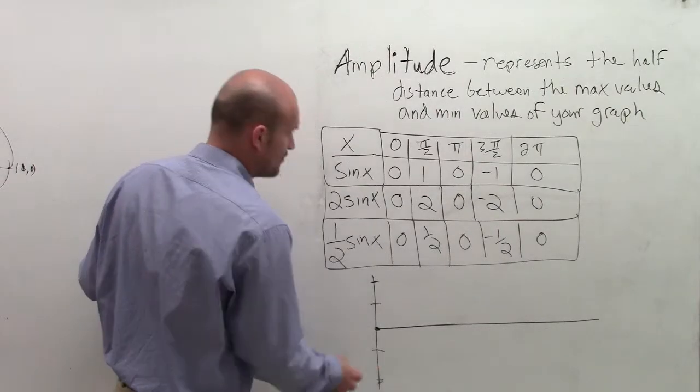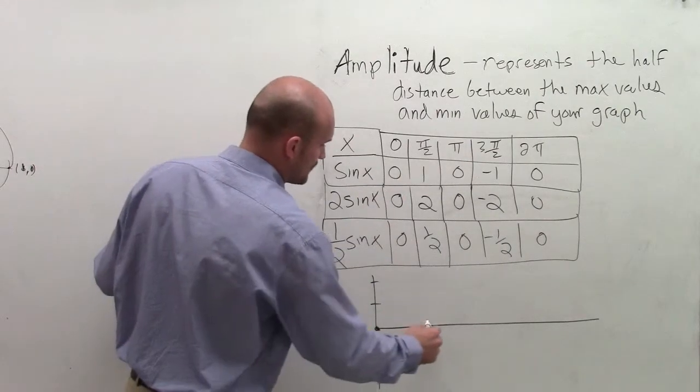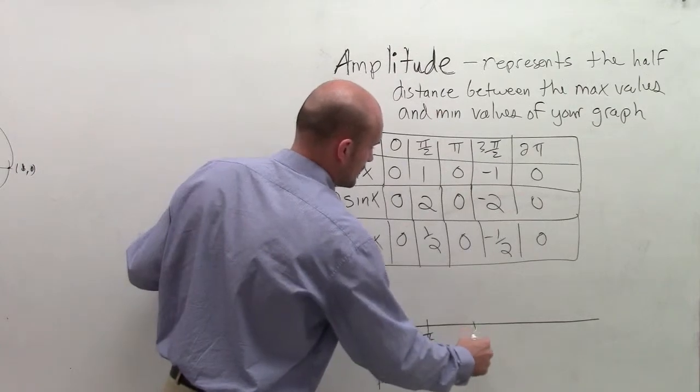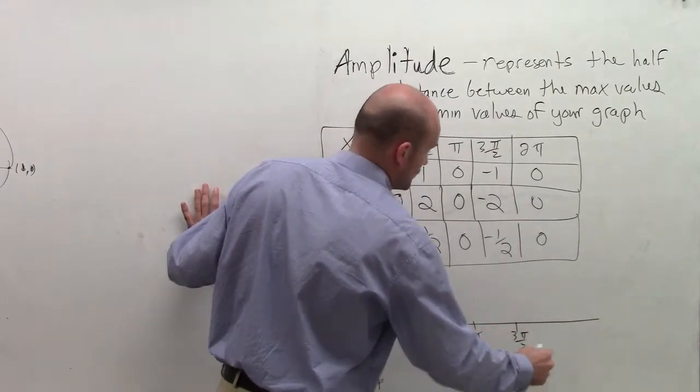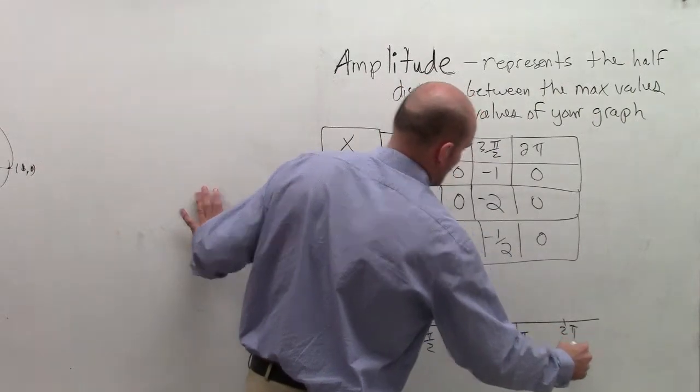So our important points that we've talked about, we have 0, pi over 2, pi, 3 pi over 2, and 2 pi.